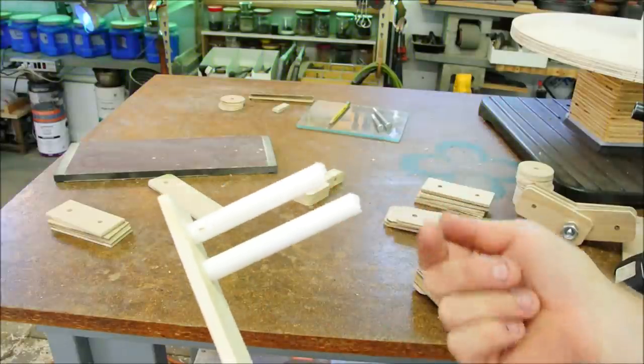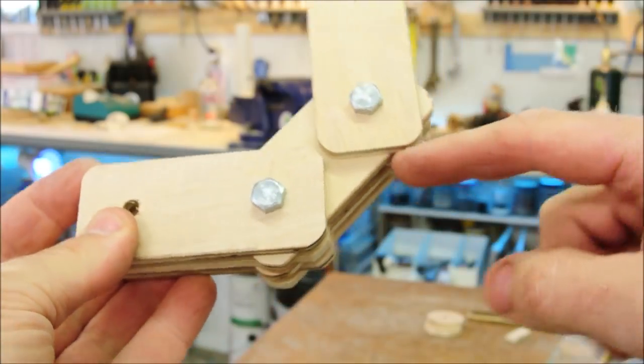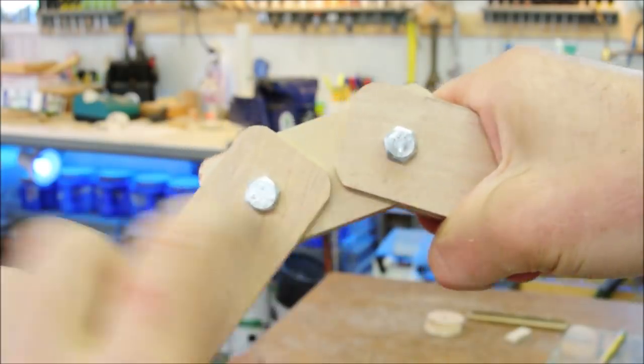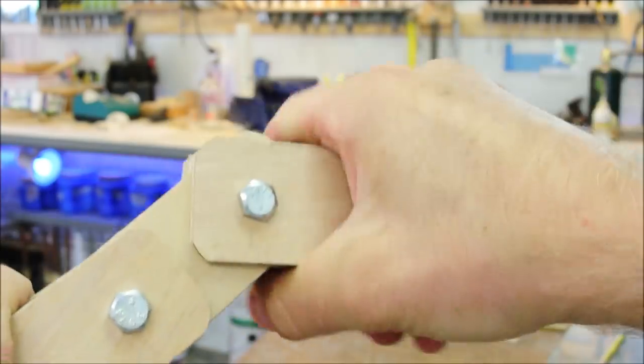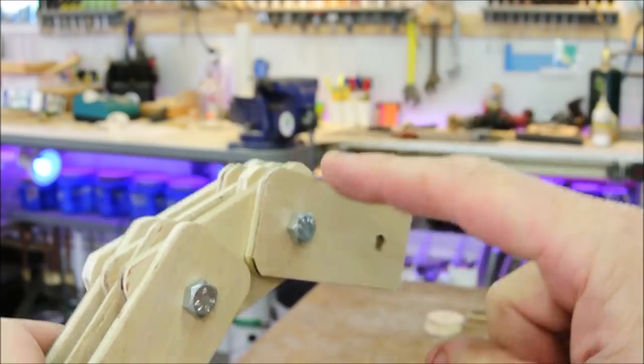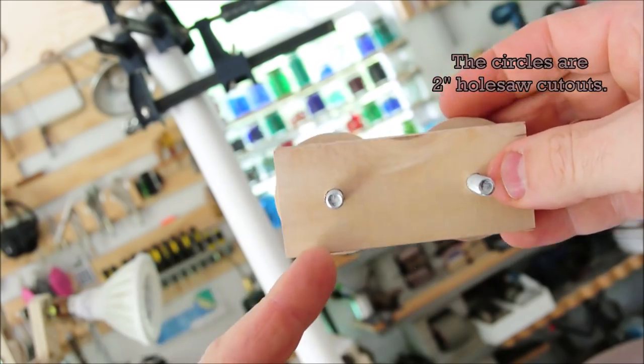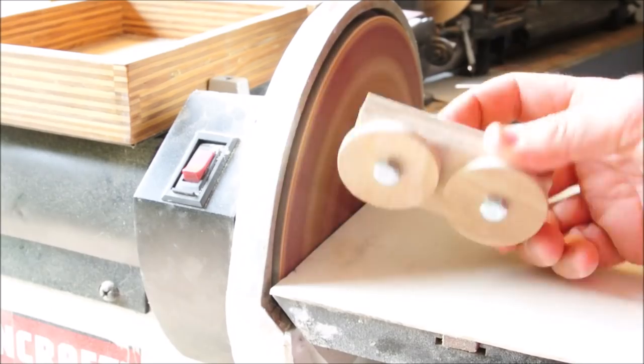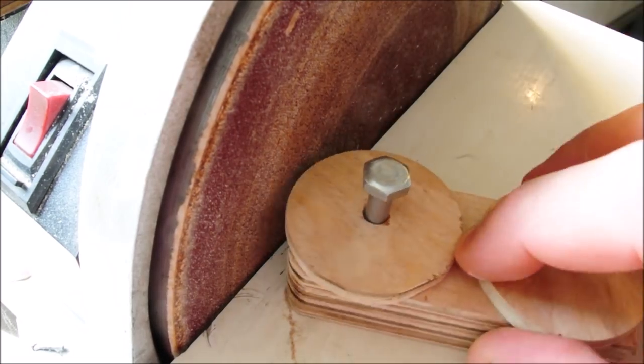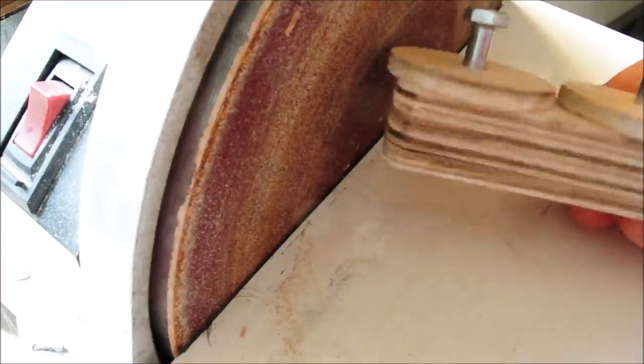You'll notice that the links are all rounded and there's two reasons for this. One is so that they don't bind in the middle, and the other is so that they don't pinch you or hurt your hands. In order to do this, put a circle on it like this, make a setup like this, and then just take it over to the sander. You can try some variation like this, something just so that you hug the side of that circle.